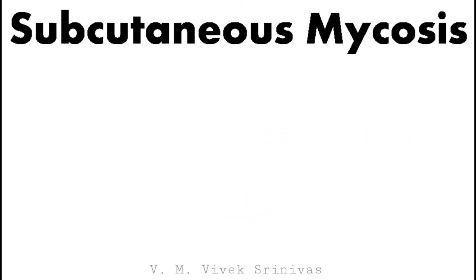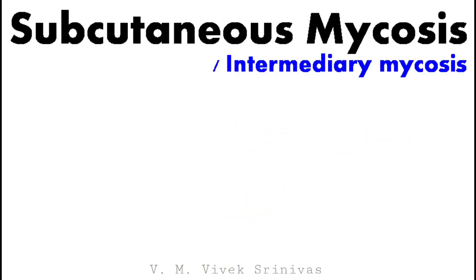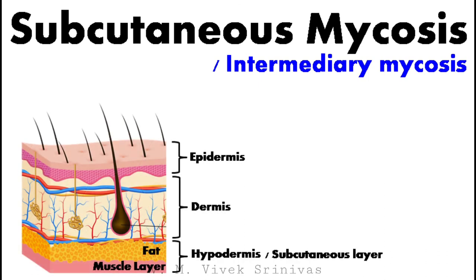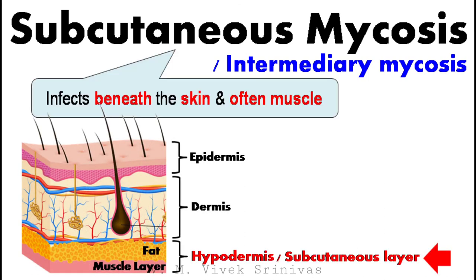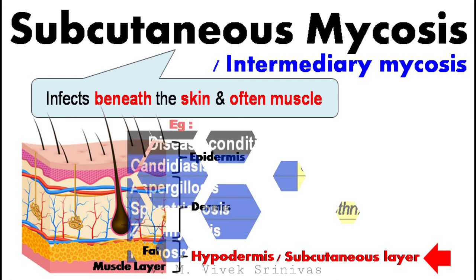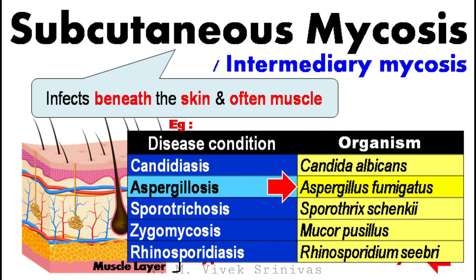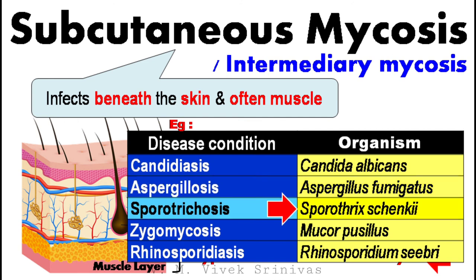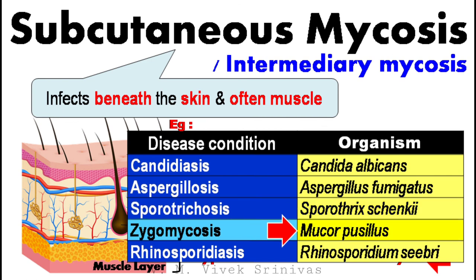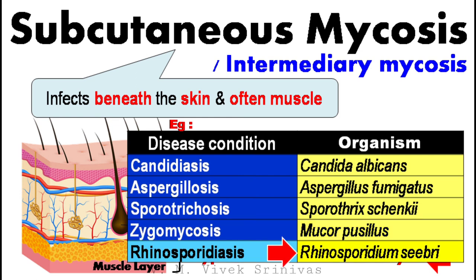Next, subcutaneous mycosis, or intermediary mycosis. These organisms target the deeper layers of skin and often muscle. Disease conditions include candidiasis caused by Candida albicans; aspergillosis caused by Aspergillus fumigatus; sporotrichosis caused by Sporothrix schenckii; zygomycosis caused by Mucor; and rhinosporidiosis caused by Rhinosporidium seeberi.